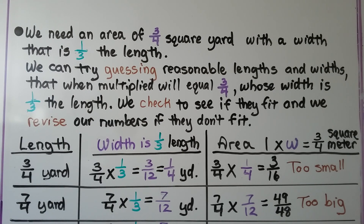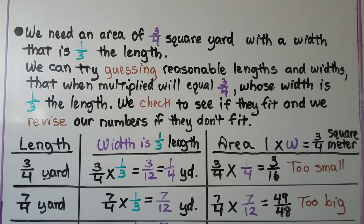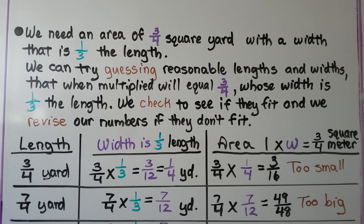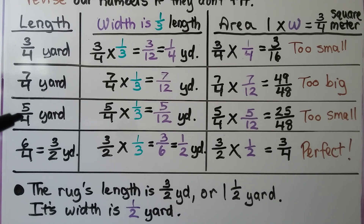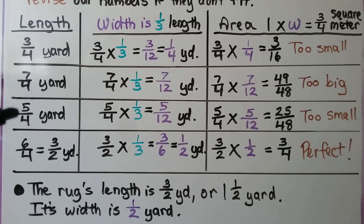We can try seven-fourths. To get one-third of it, we multiply seven-fourths times one-third, and that's seven-twelfths yard. We multiply seven-fourths times seven-twelfths to get the area, which is forty-nine forty-eighths. That's too big — more than one. If three-fourths was too small and seven-fourths was too big, we could try in the middle with five-fourths.